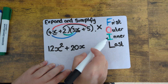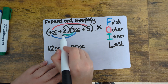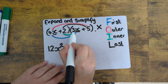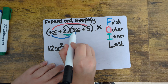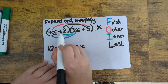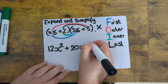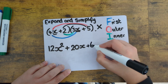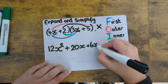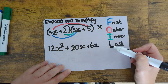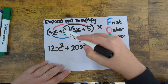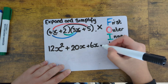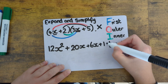Then the inner two terms — 2 lots of 3x, which is 6x. And then the last terms, which is 2 times 5, which is just 10. There's no letters involved in this bit.